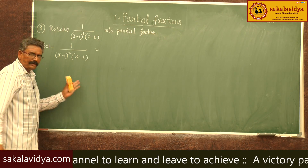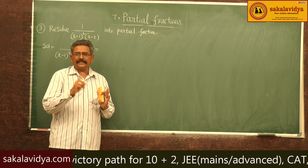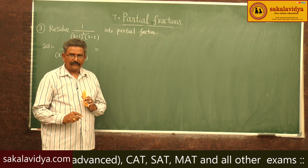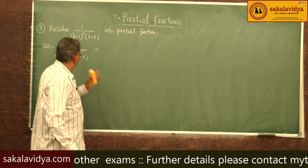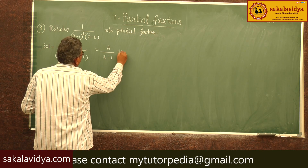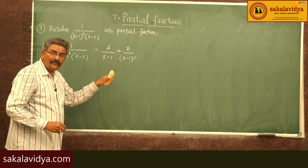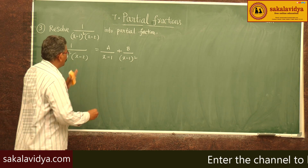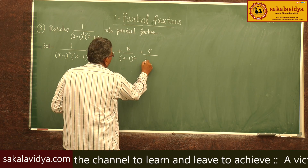Here (x minus 1) squared is a repeated linear factor. Since it is a repeated linear factor, there are 2 partial fractions that will exist for this one — that is A by (x minus 1) plus B by (x minus 1) squared. But there is one more factor, x minus 2, which is a non-repeated linear factor. So for that one there will be a partial fraction of the form C by (x minus 2).